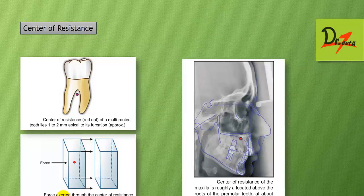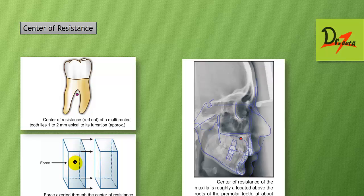The center of resistance is the point through which the resultant force acting upon a body would produce a translatory movement. For a multi-rooted tooth, the center of resistance lies one to two mm apical to its furcation.